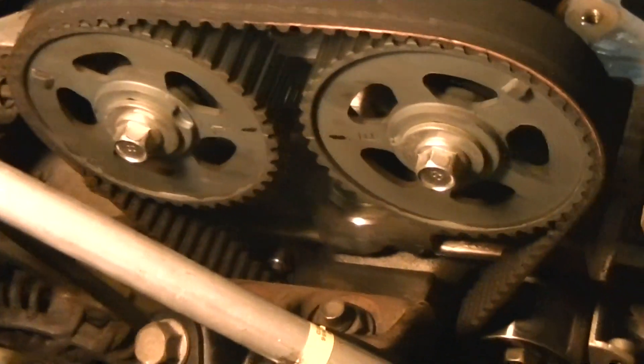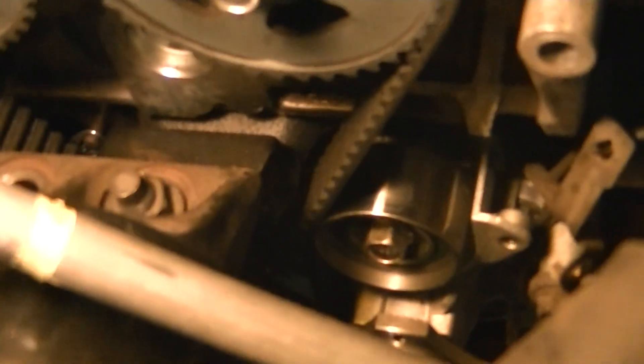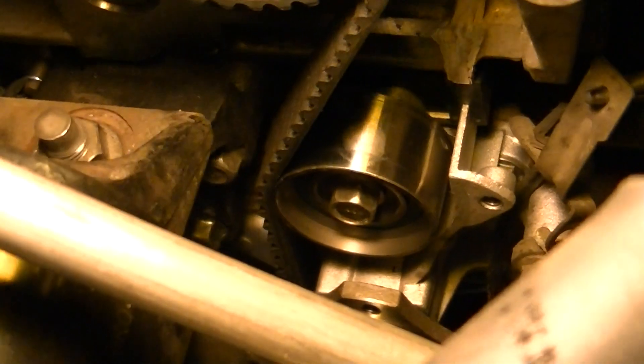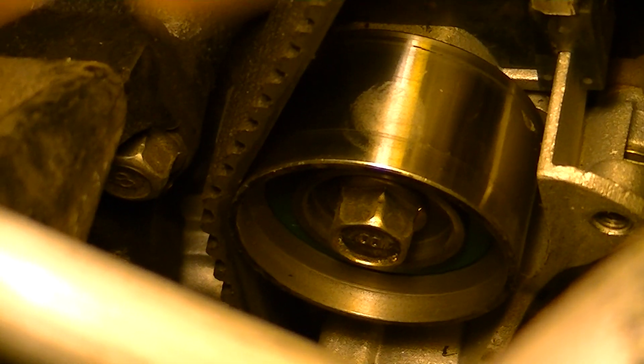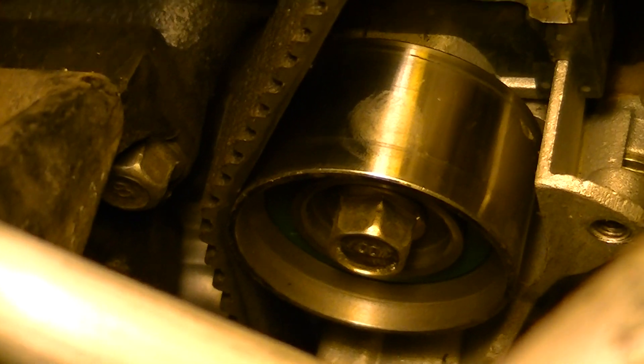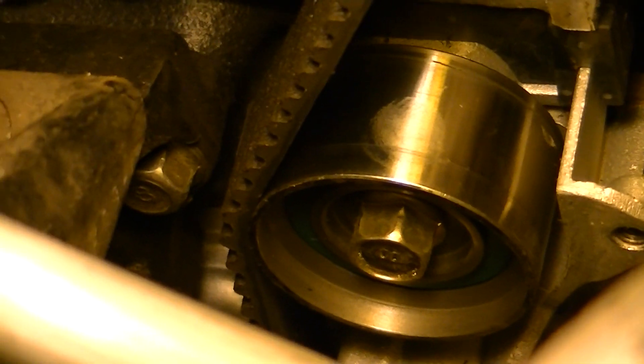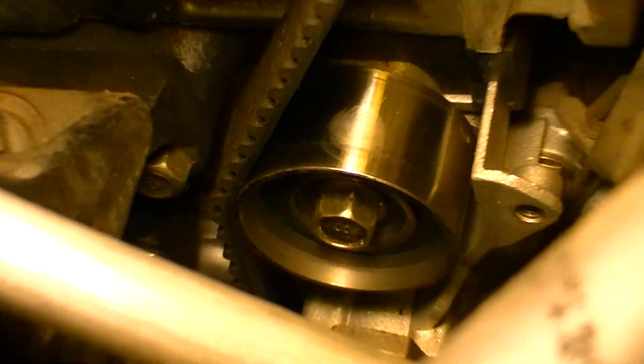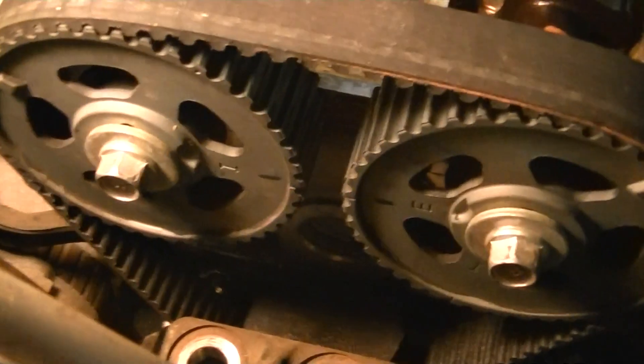There are two wheels. One of them is an idler right there. That bolt holds it solid to the block. It doesn't pivot or anything. And the tensioner wheel...